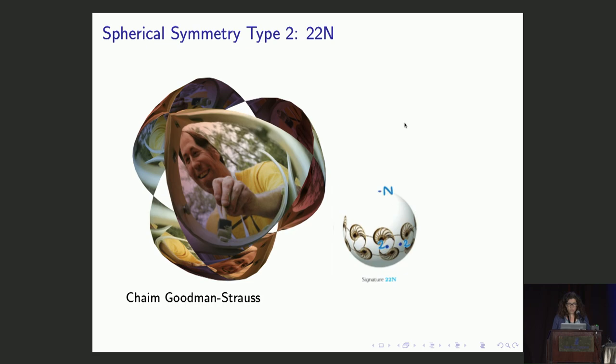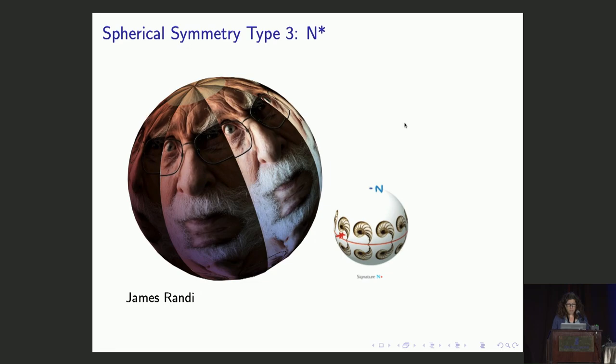If we add in a little feature at the equator, two-fold rotation, we get two-two n symmetry, shown by Chaim Goodman-Strauss. Here N equals two, so we've really got two-fold rotation at the poles and at points of the equator.